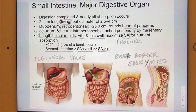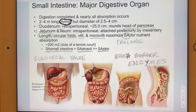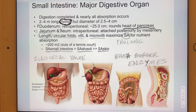The small intestine is two to four meters long when we're alive. The duodenum is about 25 centimeters — roughly 10 inches — and the rest is divided roughly half jejunum and half ileum. The duodenum is retroperitoneal and hugs the head of the pancreas, whereas the jejunum and ileum are intraperitoneal.